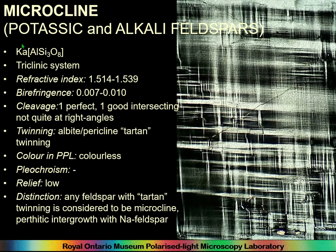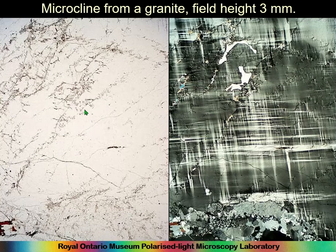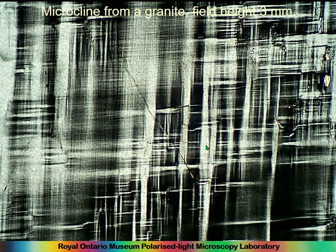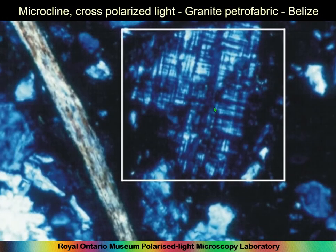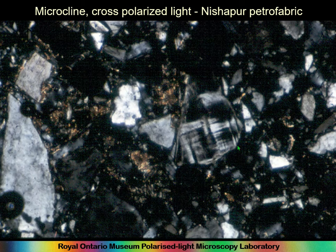Still in the potassic feldspars: microcline is distinguished by its tartan twinning. Essentially, if you see any feldspar with tartan twinning, it's microcline. The pattern is very distinctive — you won't be able to miss it. Here it is in plain polarized light, starting to weather, and here the tartan twinning is very clear. Here it is in pottery from Belize and in stone paste from Nishapur, Iran.